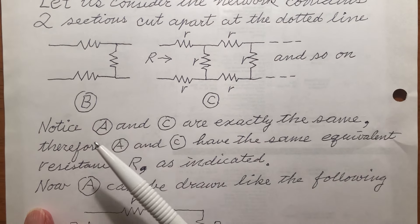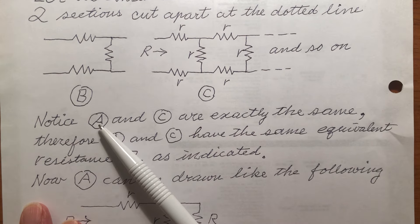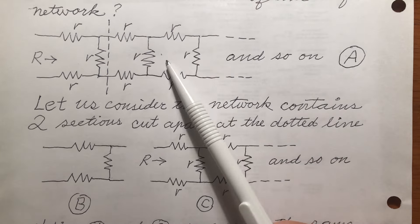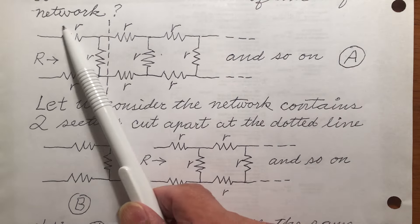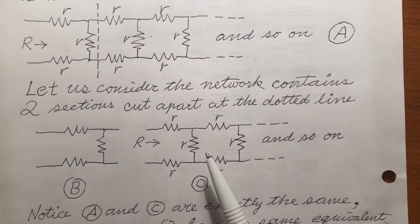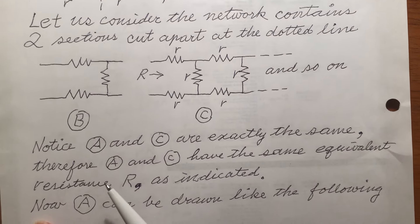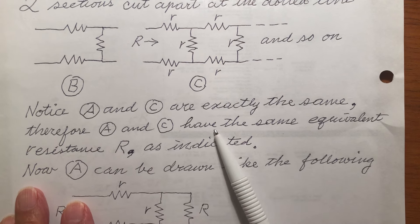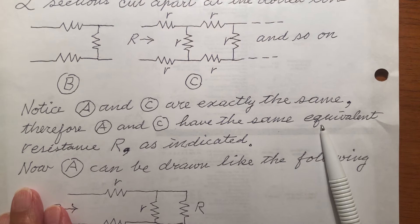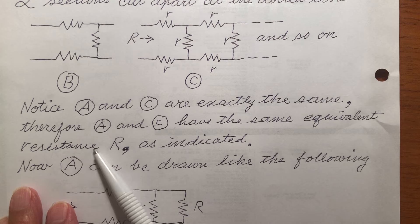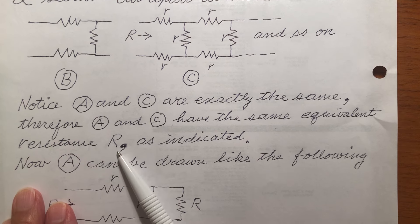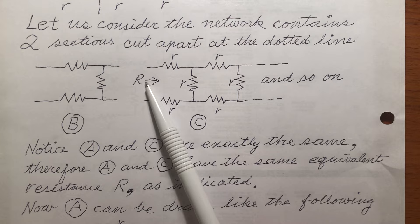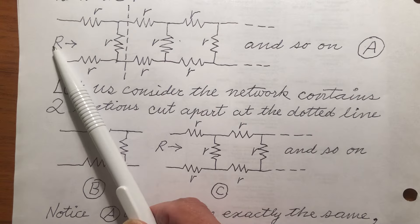So here I write down. Notice A and C are exactly the same. Therefore, A and C have the same equivalent resistance. We call it capital R. As indicated. I indicated here, R, R.